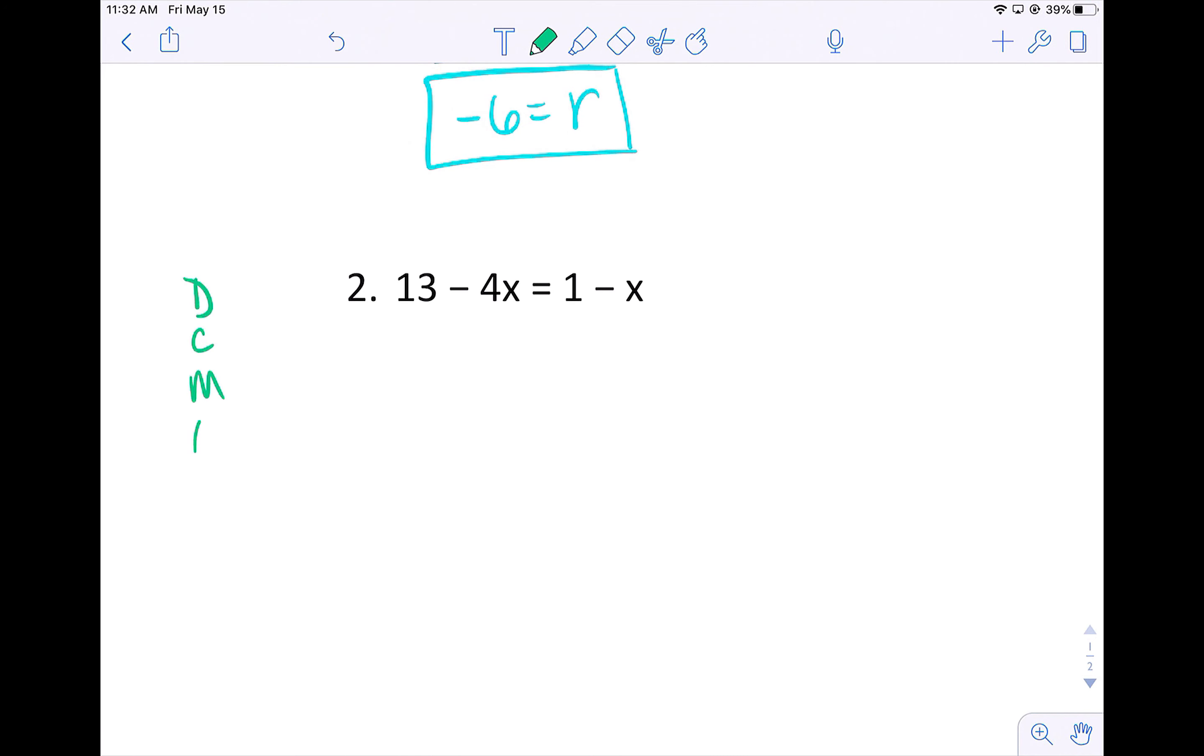For the next problem, 13 - 4x = 1 - x, I have x's on both sides so I need to move them to the same side. I'm going to move 4x by making it the opposite so that it cancels. Remember if it is not the opposite it will not cancel. So negative 4x, to move it I need a positive 4x so that it will cancel. Negative 4 plus 4 is zero. Whatever I do to one side I have to do to the other, so negative 1 plus 4 is 3.